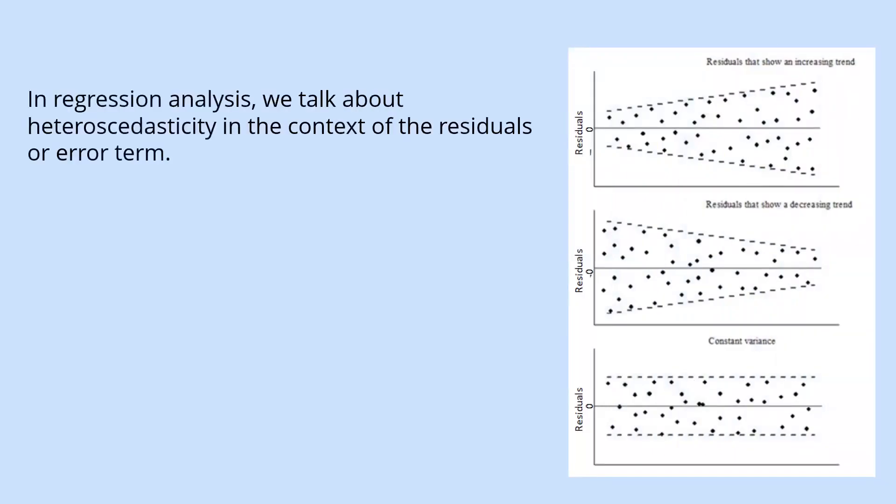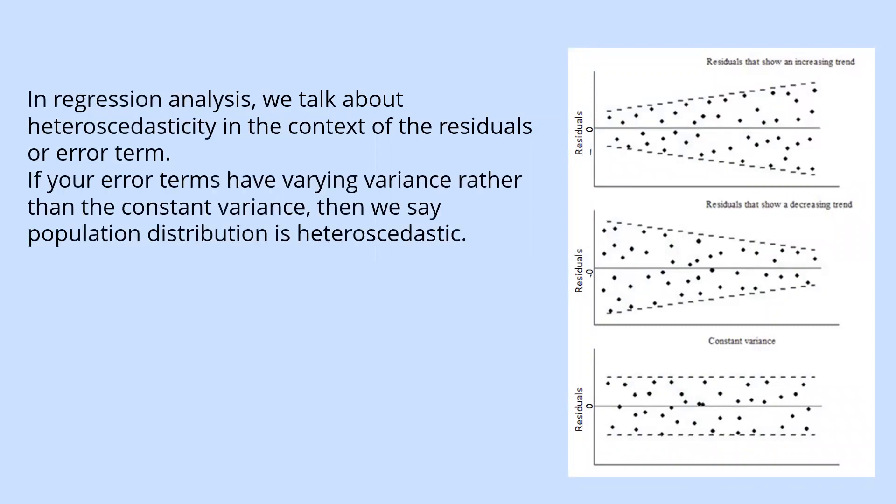In regression analysis, we talk about heteroscedasticity in the context of residuals or error term. If your error terms have varying variance rather than the constant variance, then we say the population distribution is heteroscedastic.